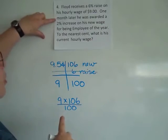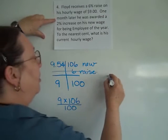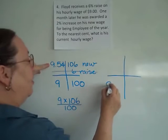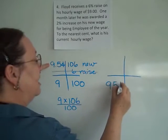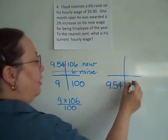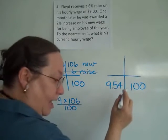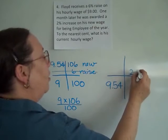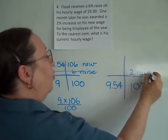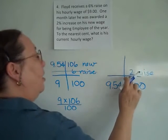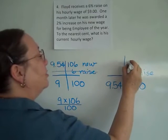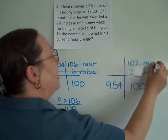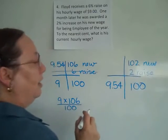Now a month down the road, we have a new problem. His original salary is now $9.54 — there's your 100. He's got a 2% increase, another raise, which means a raise is added to your 100%. So 102% is going to be his second new salary.